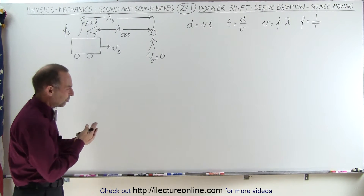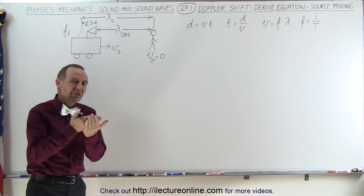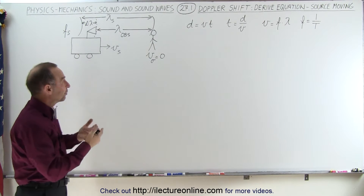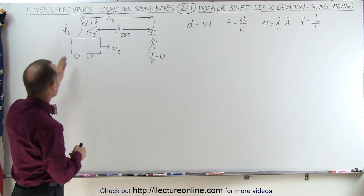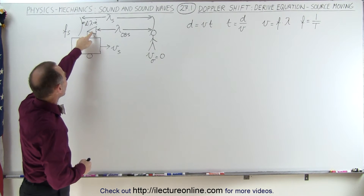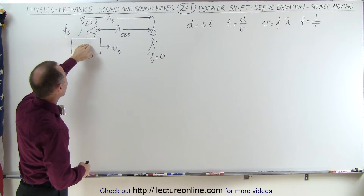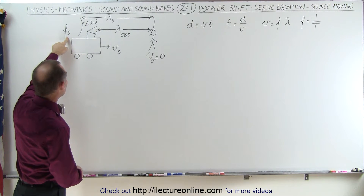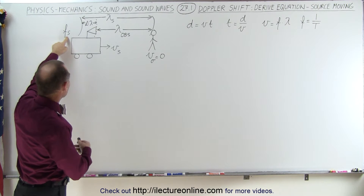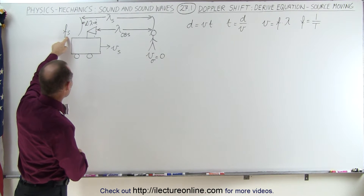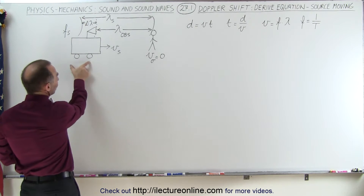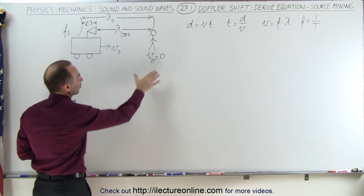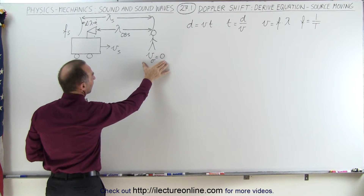What we're trying to do is relate the frequency of the sound observed relative to the frequency of the source. Here we have a source — a little speaker — making sound at some initial frequency, the frequency of the source F_S, and the source is moving towards the observer at velocity V_source. The observer, in this case, is not moving at all.